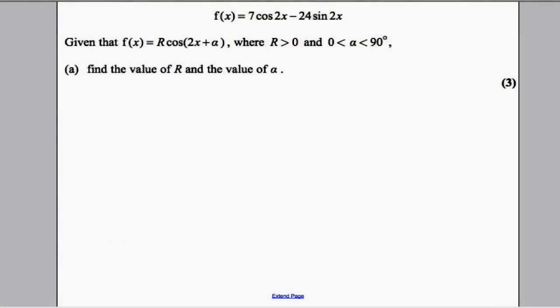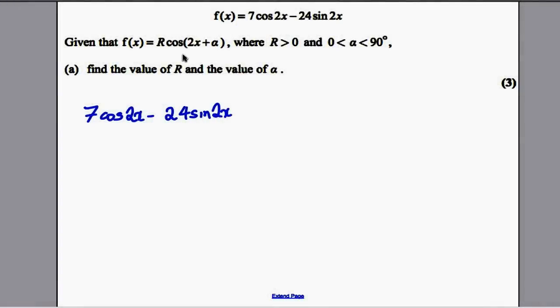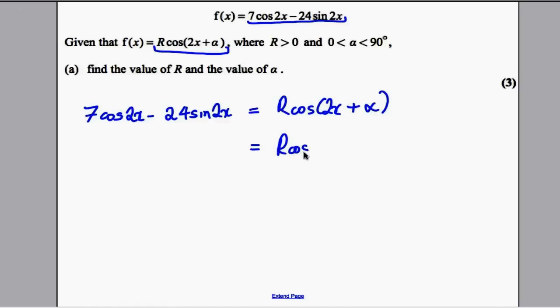Let's go ahead and do this. You should be familiar with this. We can write 7cos2x - 24sin2x in this form: Rcos(2x + α). Always write down your original function and then your R cos form. Then expand the R form using the addition formula: Rcos2x cosα - Rsin2x sinα. This is equal to 7cos2x - 24sin2x.